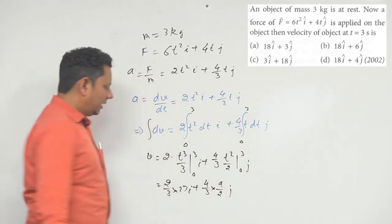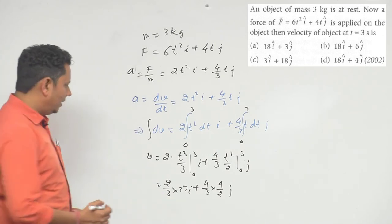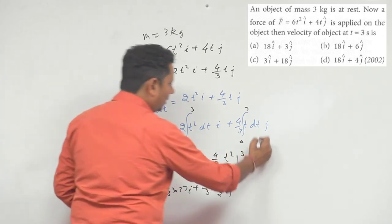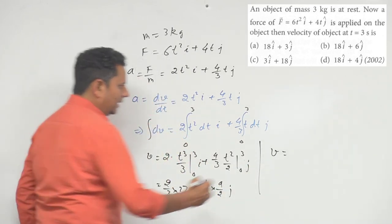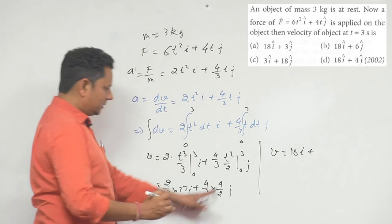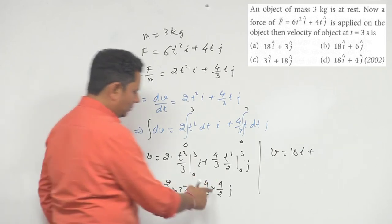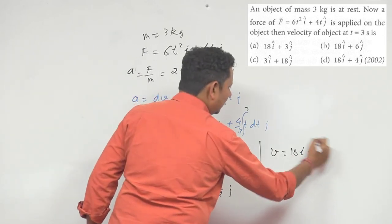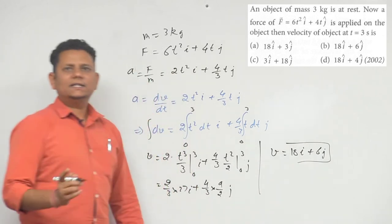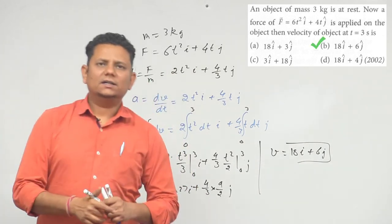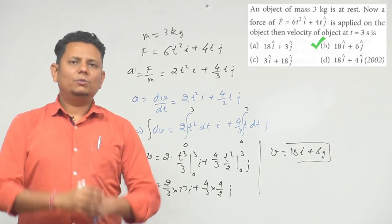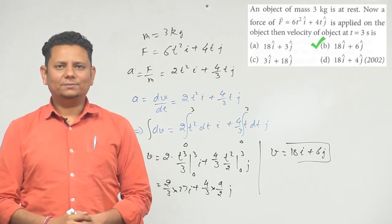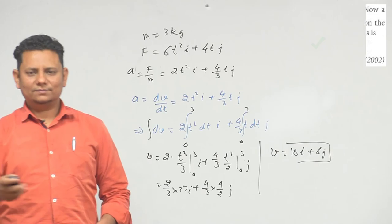Solving for i cap and j cap, we will get our final value. The final result is v = 18i cap plus 6j cap. Based on this, we can say 18i cap plus 6j cap, which means option B would be the correct choice for this particular problem. Thank you.